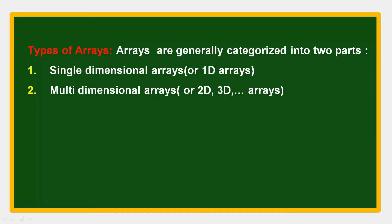Types of arrays: arrays are generally categorized in two parts. The first one is a single-dimension array, that is one-dimensional, and the next one is multi-dimensional arrays.